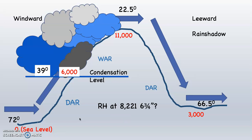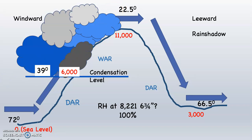What about the relative humidity at 8,221 feet and 6 and 3-quarter inches on the windward side — right about there? Well, is there a cloud forming? We know there's a cloud forming everywhere from 6,000 to 11,000 feet — every place. Any number in that range, there's a cloud, which means the relative humidity has to be 100%.